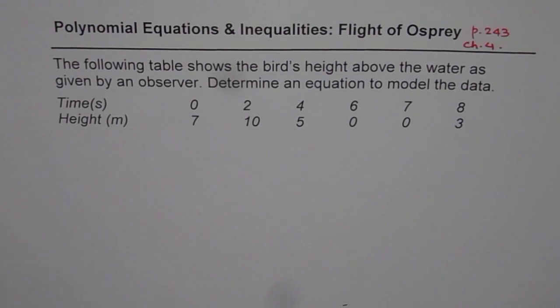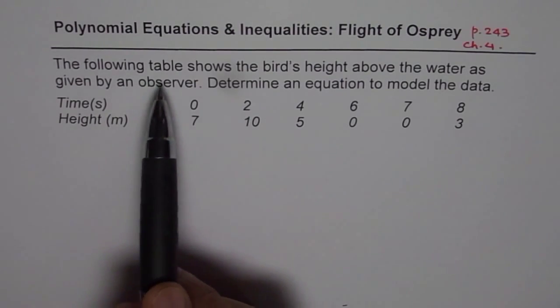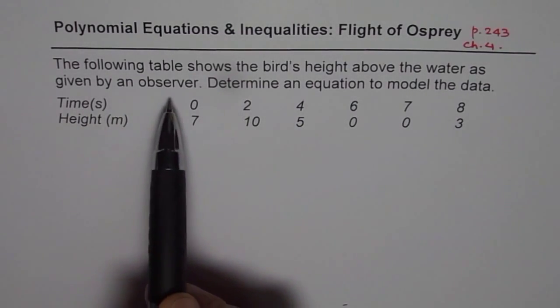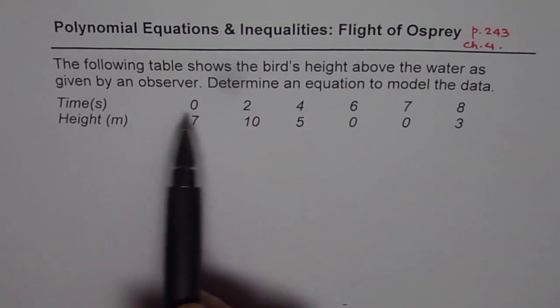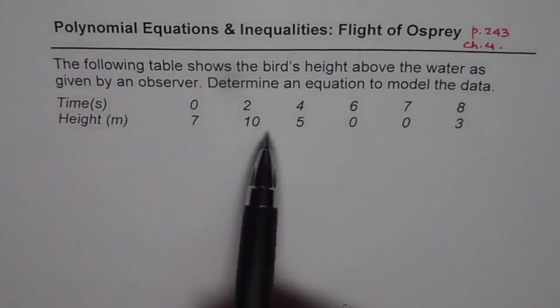Now there are many sections to this question but the main part is to find the polynomial equation which can represent the data. And that is the part which I will do in this particular video. The following table shows the bird's height above the water as given by an observer. Determine an equation to model the data. At different times we have height of the bird: 0, 7, 2, 10, 4, 5, 6, 0, 7, 0, 8, 3.